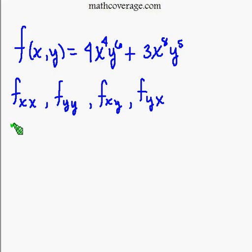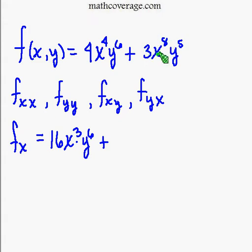So we have the first partial with respect to x. Remember we treat y like it's a constant. So we take 4 and we bring it out front. 4 times 4 is 16, x to the third, rewriting y, plus, and then the derivative of this term here with respect to x. We bring the 8 out front. 8 times 3 is 24, x to the seventh, and rewriting y.